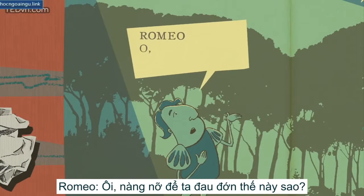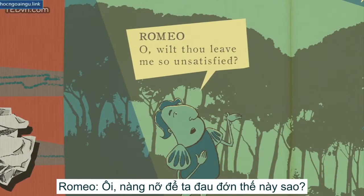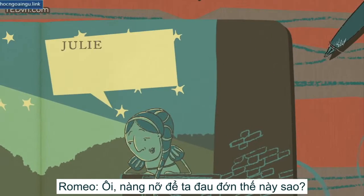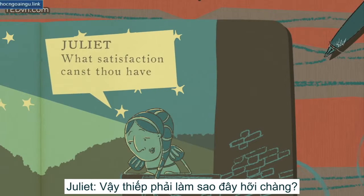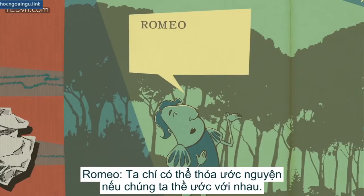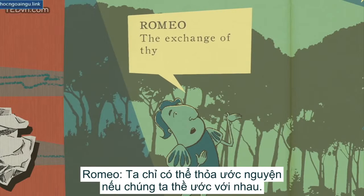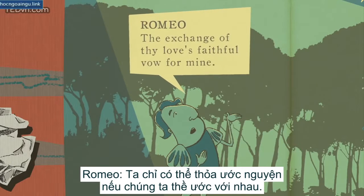Romeo. Oh, wilt thou leave me so unsatisfied? Juliet. What satisfaction canst thou have tonight? Romeo. The exchange of thy love's faithful vows for mine.